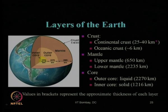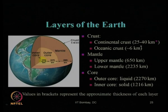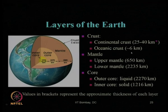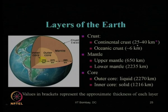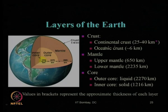The crust can be subdivided into two types: continental crust, with a typical thickness of about 25 to 40 kilometers, and oceanic crust, with a thickness of about 5 to 6 kilometers. The total crustal thickness of the earth is therefore about 5 to 40 kilometers.